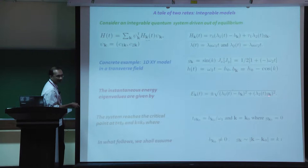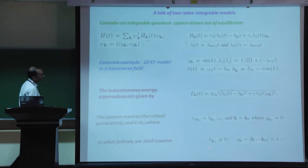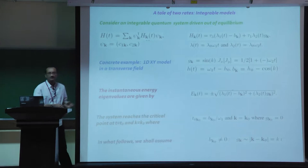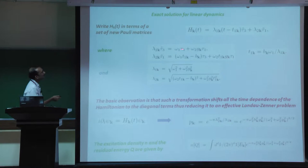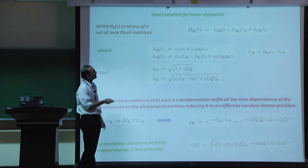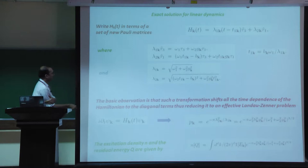The system reaches a critical point at t = t_0 when g_k = 0 for some k = k_0 and b_{k_0} = lambda_1(t_0). We assume b_{k_0} is nonzero and g_k goes linearly around that gapless point. There is an exact solution for this linear dynamics: one can make a unitary transformation and go to a frame where all time dependence, for linear driving, is transferred to the diagonal term. This reduces the problem to an effective Landau-Zener problem for each momentum.